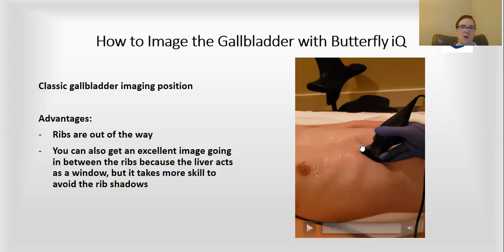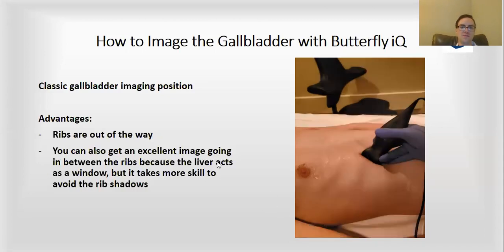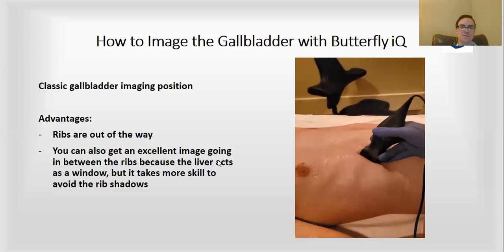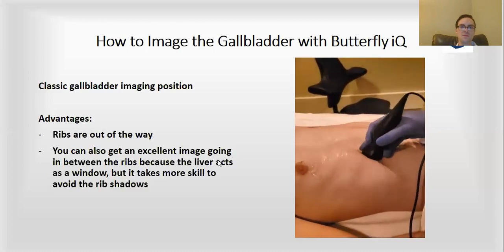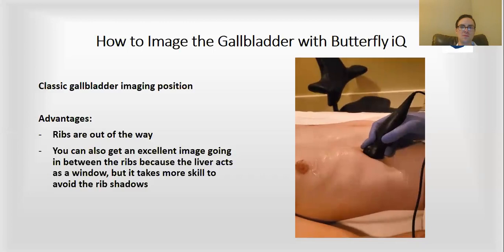You want to have it right up on that rib line and you can turn the probe just as our ultrasound text shows here. Parallel to the ribs is going to be more of a sagittal image, which is kind of a long axis of the gallbladder.